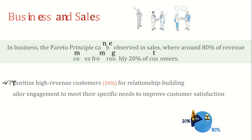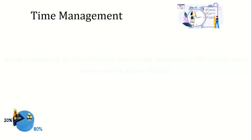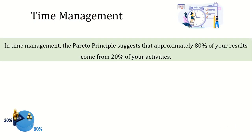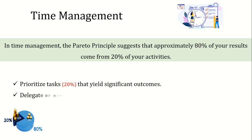As far as time management is concerned, the Pareto Principle suggests that approximately 80% of your results come from 20% of your activities. You need to maximize productivity by identifying and prioritizing the most impactful tasks, such as focusing on critical projects and high-priority issues that generate desired outcomes, while delegating or minimizing time spent on less important activities.